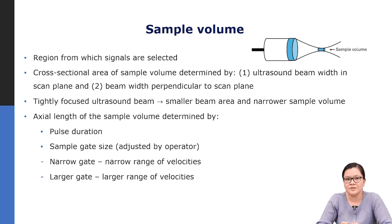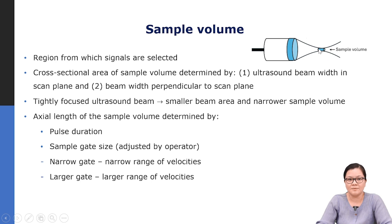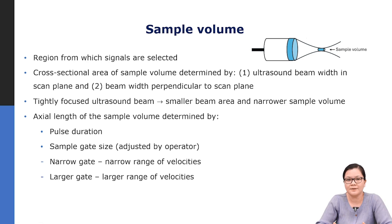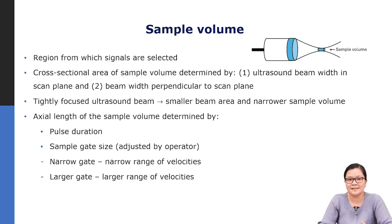The region from which signals are selected is called the sample volume. The cross-sectional area of the sample volume is determined by the ultrasound beam width along the scan plane and perpendicular to it — a tightly focused beam gives a narrower sample volume. The axial length of the sample volume is determined by the pulse duration and the gate size selected by the operator. A narrow gate images a narrower range of velocities; a larger gate samples a larger range of velocities in the blood.